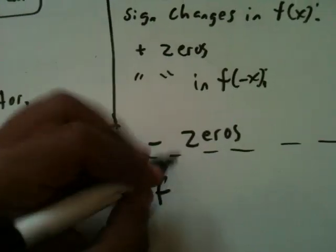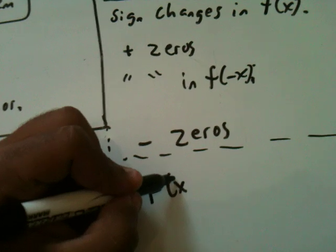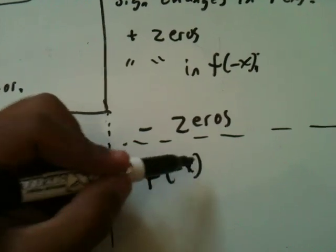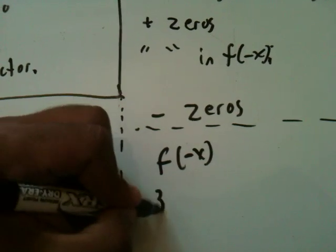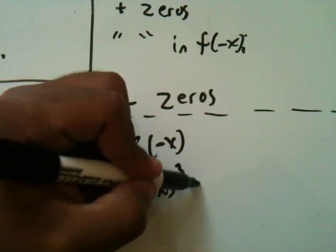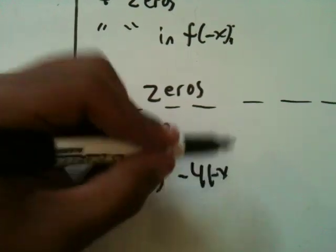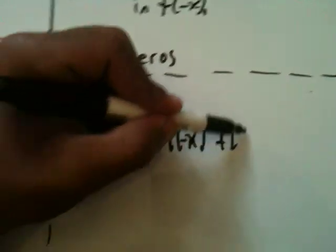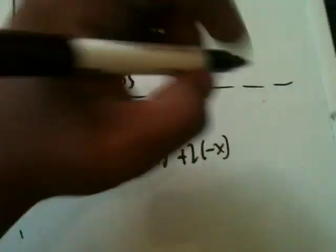Now I'm going to do f of minus x. And it says, wherever you see x, put a minus x in there. It's going to be 3 times minus x cubed minus 4 minus x squared plus 2 times minus x minus 3.